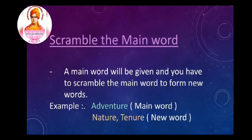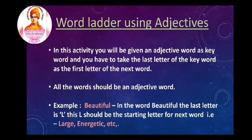The second activity is word ladder using adjectives. You will be given an adjective word as a keyword, and you have to take the last letter of the keyword as the first letter of the next word. All the words should be adjective words. For example, 'beautiful' is an adjective word, and the last letter is L, so L should be the starting letter for the next word.